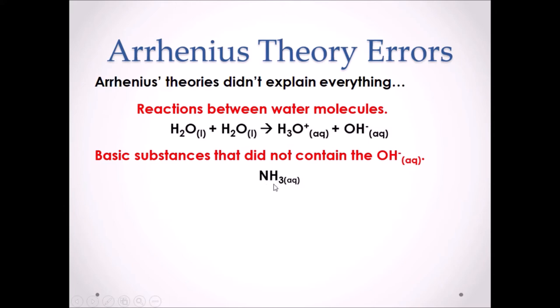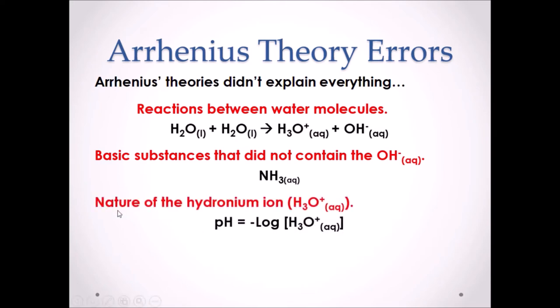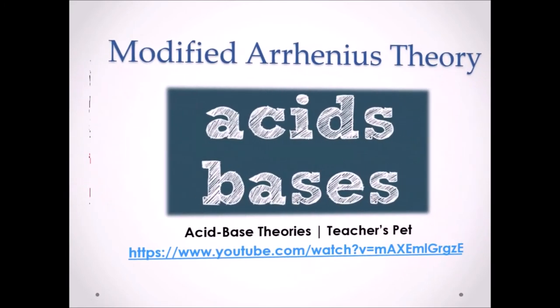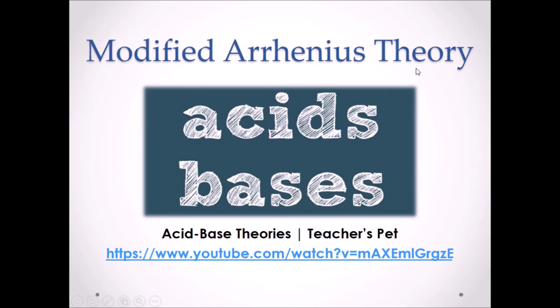For example, NH3 is a weak base — one of the few weak bases we will work with in Chemistry 20. The Arrhenius theory also cannot explain the nature of the hydronium ion H3O+. Acids ionize into H+ in the Arrhenius theory, but pH is calculated using the formula: the negative log of the concentration of H3O+. This brings us to the modified Arrhenius theory, our focus in Chemistry 20.